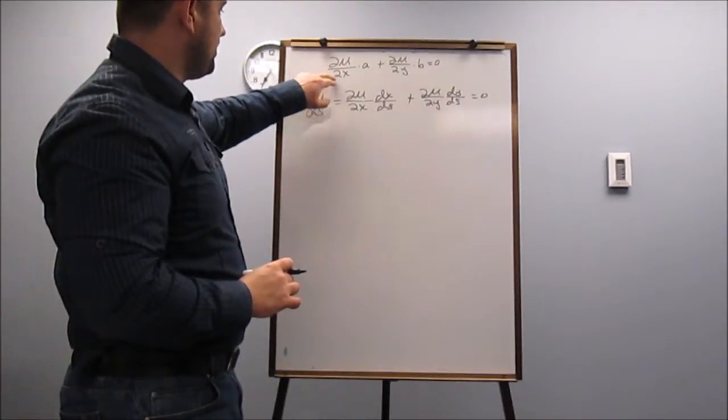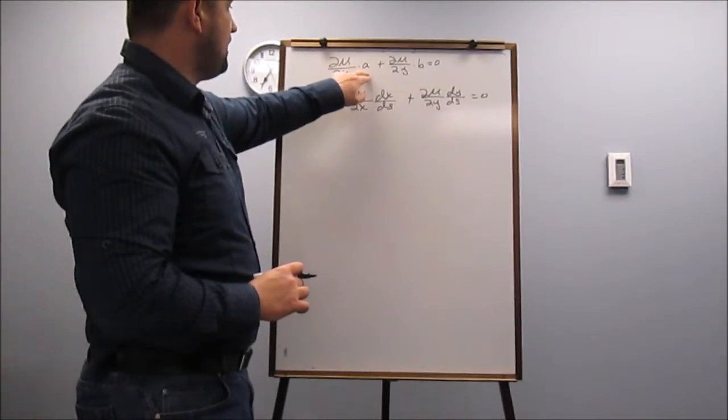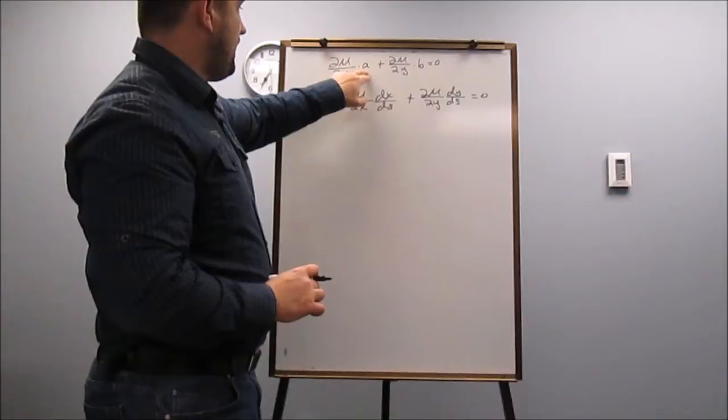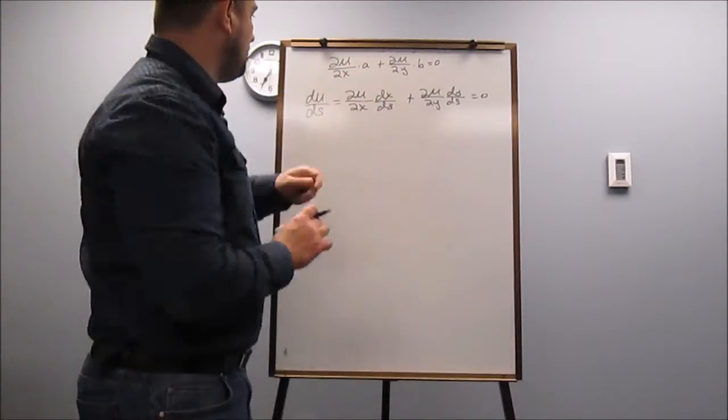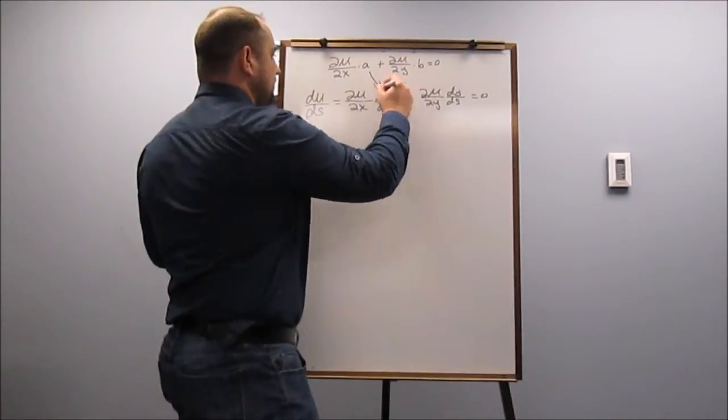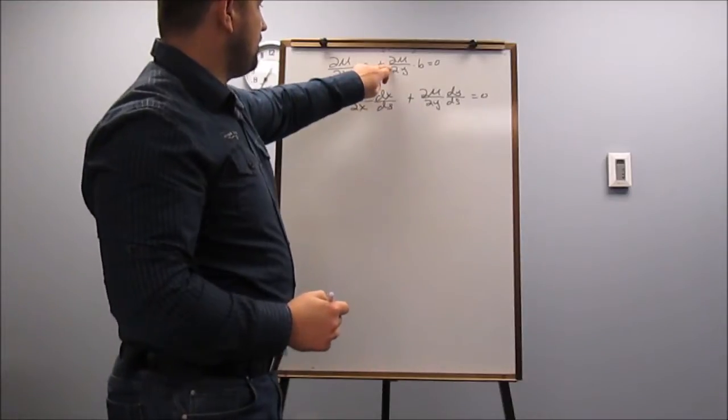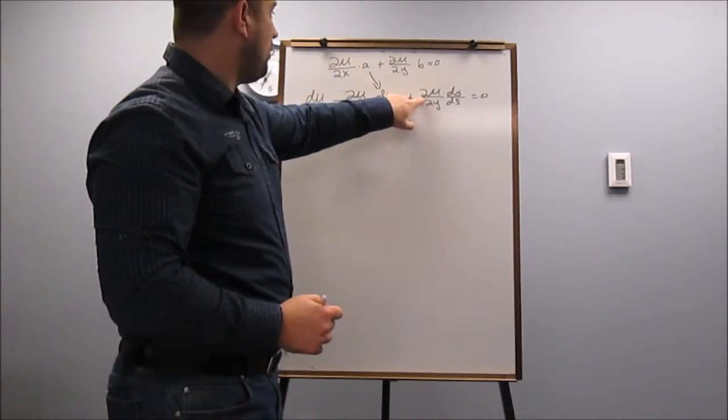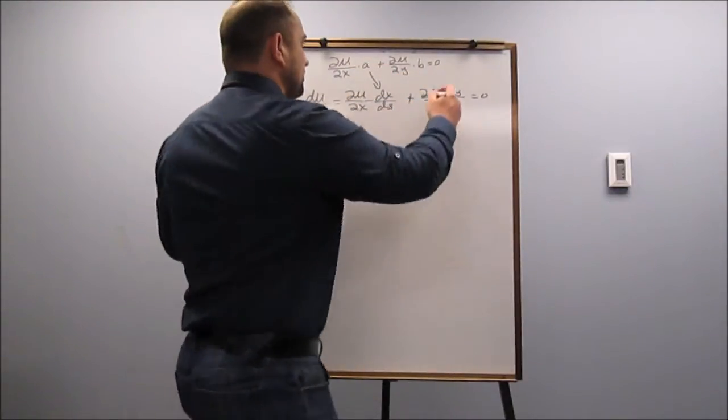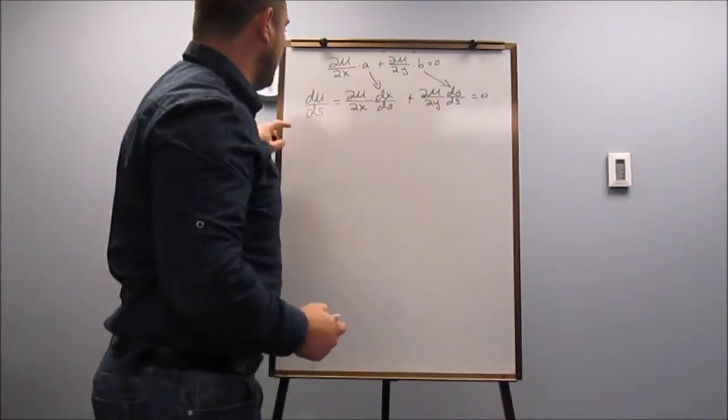So we notice partial U over partial X appears here and here, so A has to be equal to DX over DS. Likewise, partial U partial Y appears in both places, so B has to be equal to DY over DS.